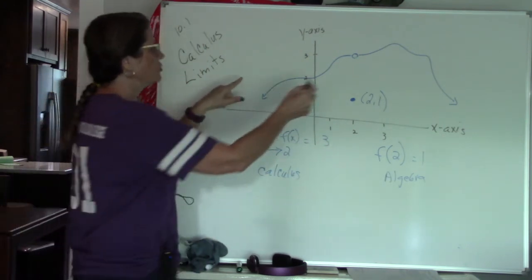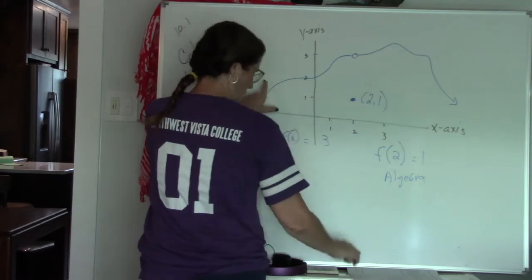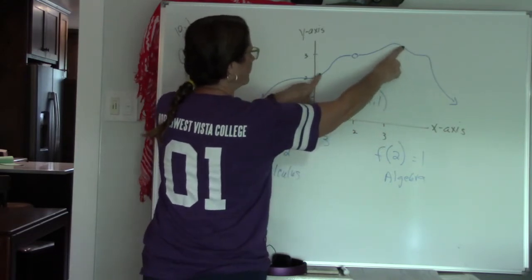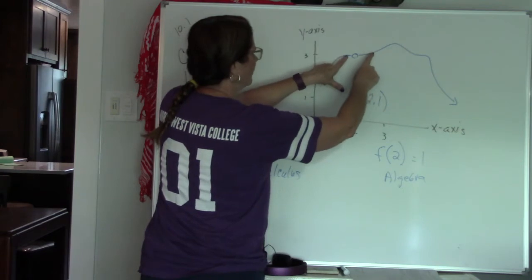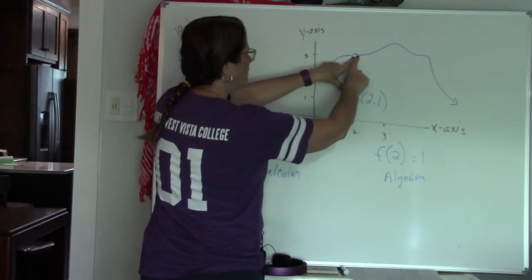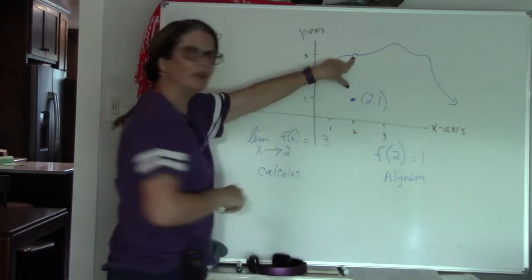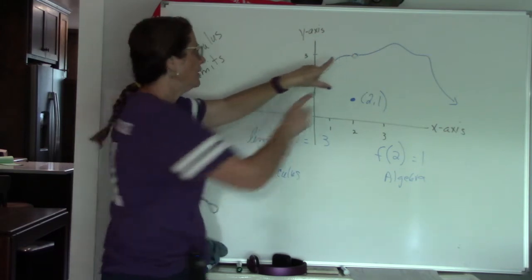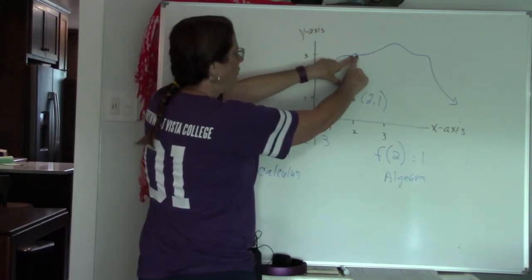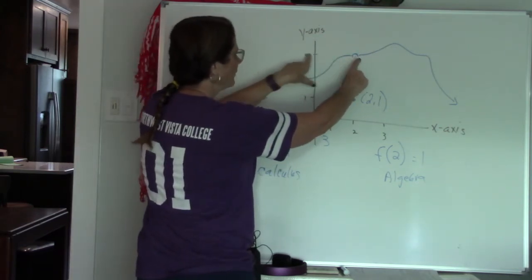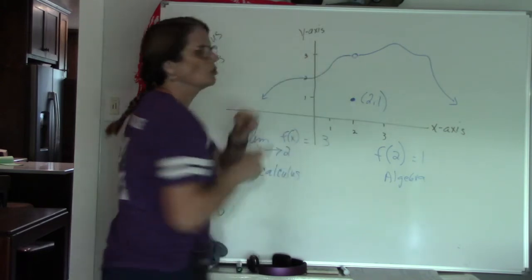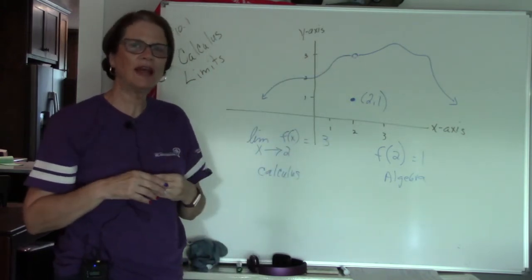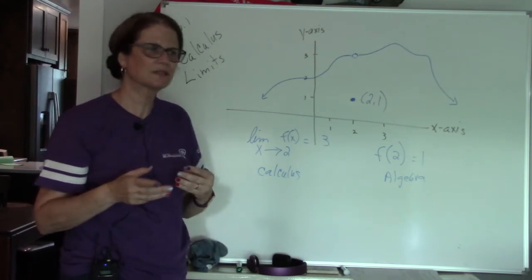What is it approaching? As my fingers come together, I'm following my graph — they're heading towards 3. They don't reach 3; they're just heading towards 3. So my fingers are coming together at y is 3, so I do have a limit. There are certain criteria that have to happen for a limit to exist.